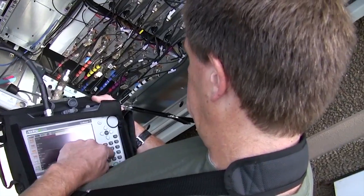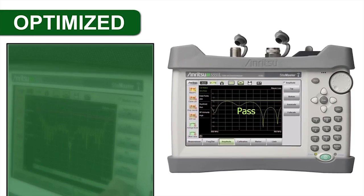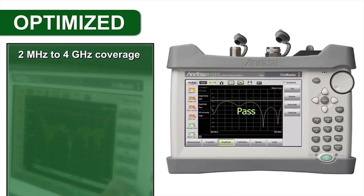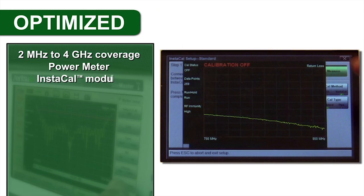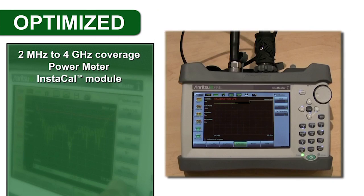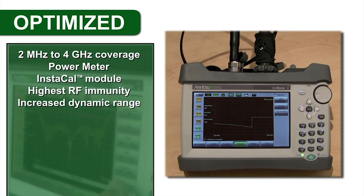In fact, the SightMaster S331L comes standard with over 20 of the most requested features including 2MHz to 4GHz frequency coverage, an onboard power meter, built-in Instacal module for fast one-connection calibration, and higher output power providing the highest RF immunity and increased dynamic range.